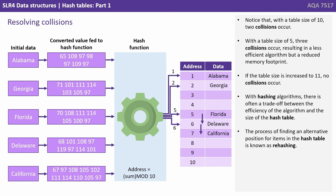Notice that with a table size of 10, two collisions have occurred. With a table size of 5, three collisions occur, resulting in a less efficient algorithm but a reduced memory footprint. If the table size would be increased one space to 11, we'd actually get no collisions in this situation. With hashing algorithms, there's often a trade-off between the efficiency of the algorithm and the size of the hash table.